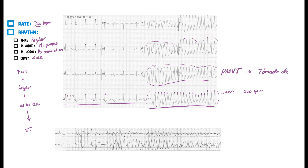When the rhythm looks like this — when it twists at the points — it's a specific type of polymorphic V-tach that we call Torsades de Pointes. What really differentiates this polymorphic V-tach is it has what's called a prolonged QT interval.